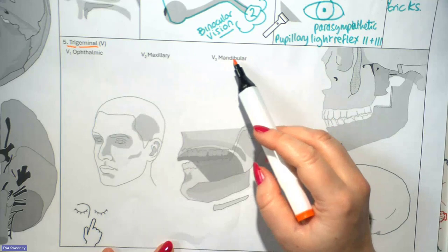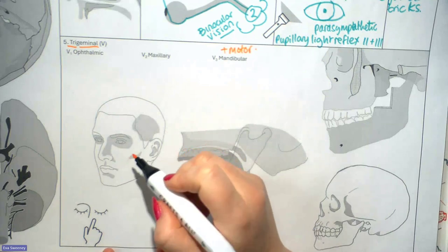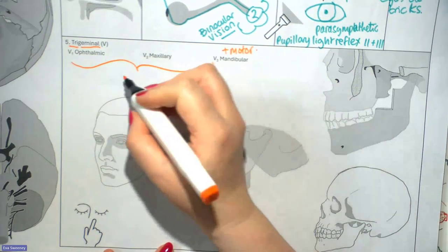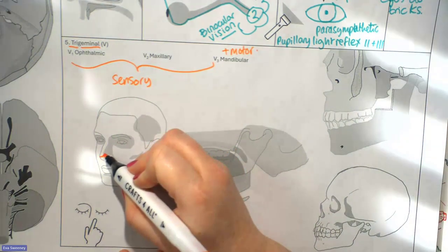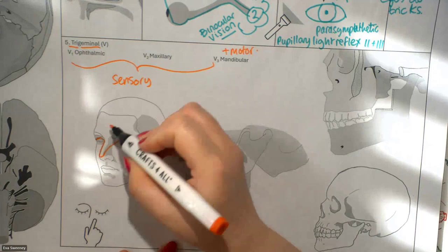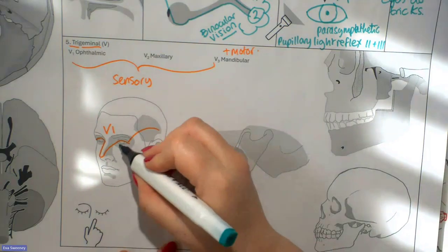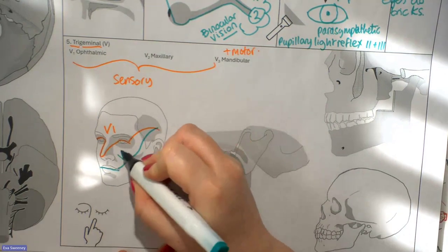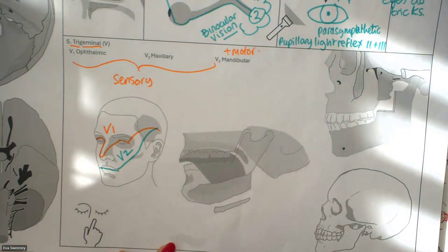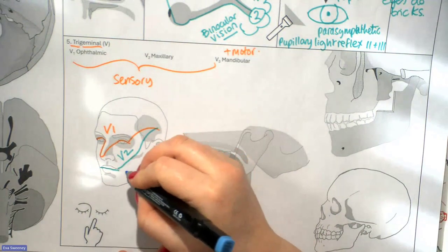In terms of the sensory components, there are areas of the face supplied by the three divisions. From the tip of the nose to the upper eyelid is V1. V2 covers the lower eyelid and lower part of the face down to the upper lip. The remaining lower lip, bits of the ear, bits of the temple, and the jaw is V3.